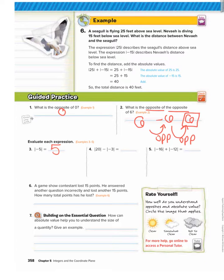Number four: absolute value of 20 minus absolute value of negative three. 20 is 20 units away from zero, minus negative three is three units away from zero. So this equals 20 minus three, which is 17.